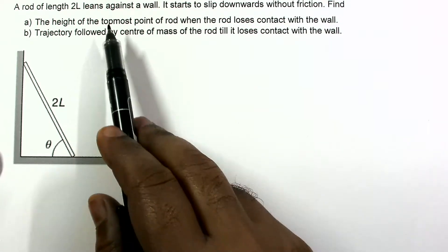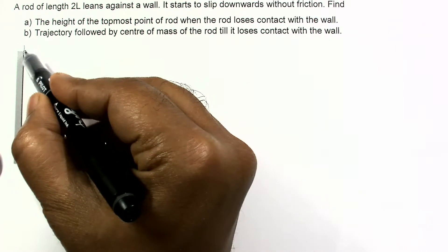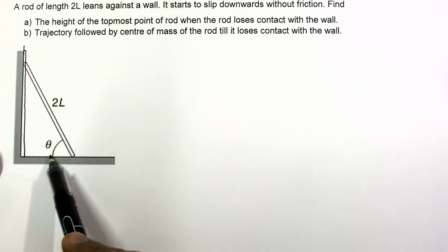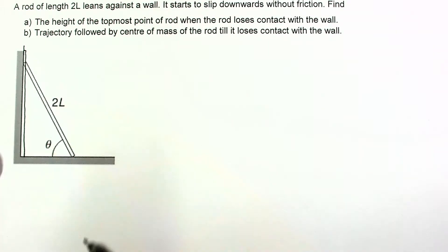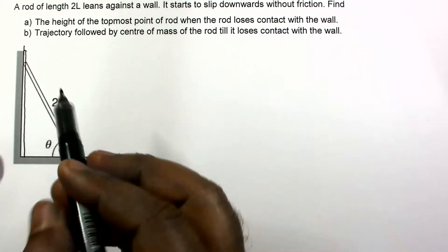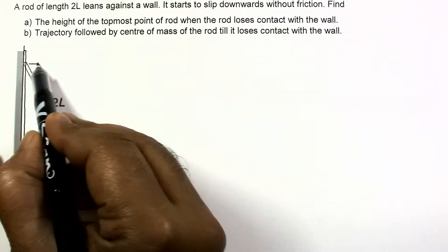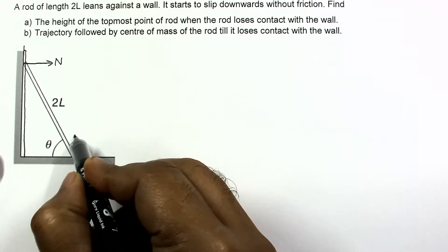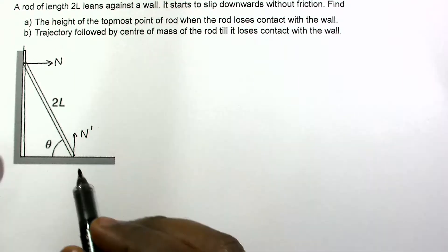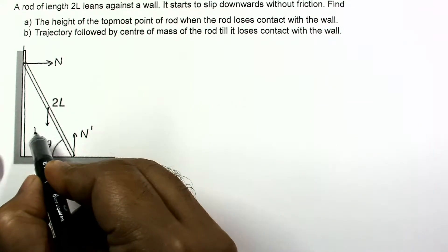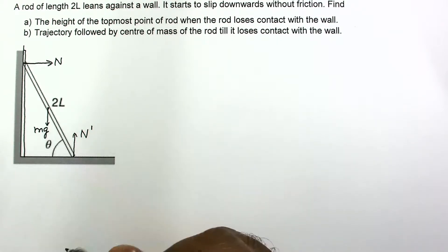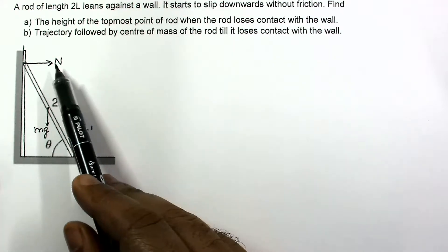Initially the rod is leaning against this wall, and it starts slipping — this end goes outward and this end comes down. At some instant, the rod is inclined at an angle. The forces at that instant are: a normal reaction from the wall (horizontal), a normal reaction from the floor (vertical), and force due to gravity mg. These are the three forces acting on the rod.